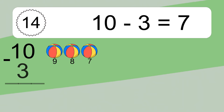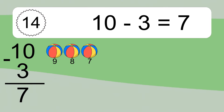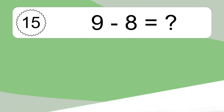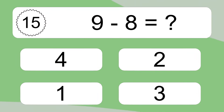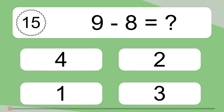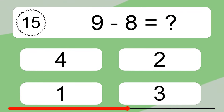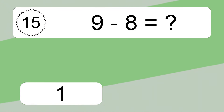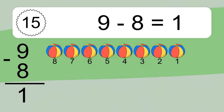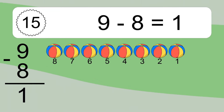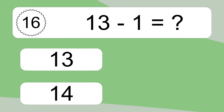10 minus 3 equals what? 10 minus 3 equals 7. Let's count it: 9, 8, 7. 9 minus 8 equals what? 9 minus 8 equals 1. Let's count it: 8, 7, 6, 5, 4, 3, 2, 1.